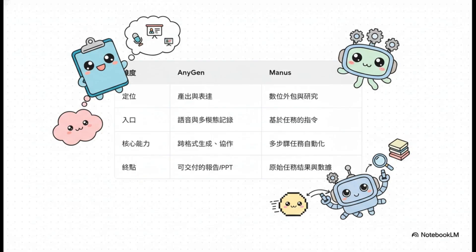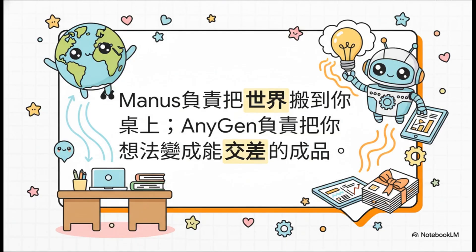Manus的定位比较像是你的数位外包工，你丢给他一个很复杂的任务，像是帮我把市场上所有竞争对手的资料都研究一遍，他就会自己跑完好几个步骤去收集整理。但Anygen的定位是产出与表达，它的强项是把你手上已经有的资料和想法，变成一份超漂亮的报告或简报。所以一个负责收集原料，一个负责烹饪上菜，分工很明确。Manus负责把全世界的资讯搬到你的桌上，而Anygen负责把桌上的想法变成可以交差的成品。